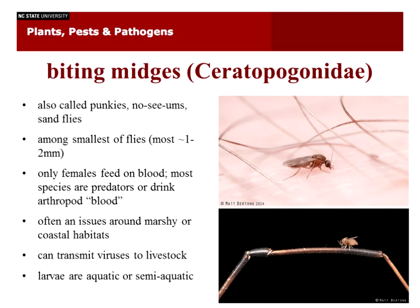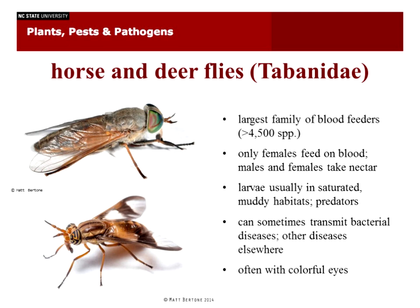They are often an issue around marshy or coastal habitats — that's where the larvae live. The larvae are semi-aquatic to somewhat terrestrial under bark and rotting logs. The main concern is for farmers or people with livestock because they can transmit blue-tongue virus to livestock like sheep and goats. People will get a nasty bite, but that might be the worst of it for us. Biting midges are actually one of my favorite groups — I should mention they are the only group of insects that pollinates chocolate in the tropics. So you have them to thank for that.